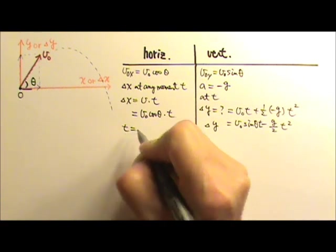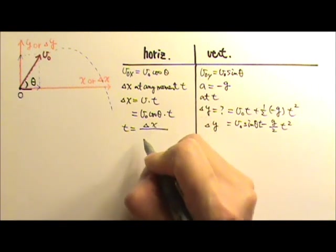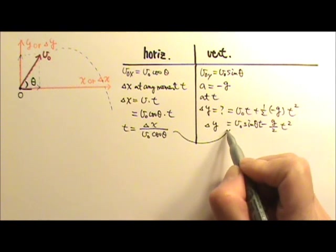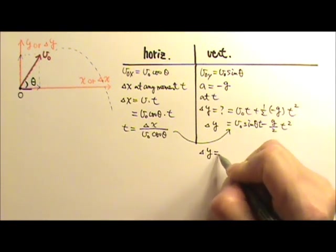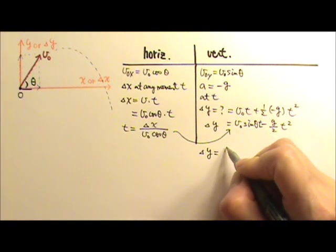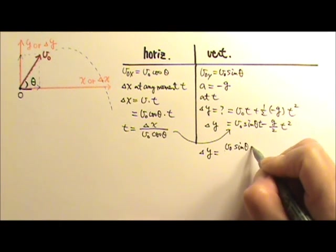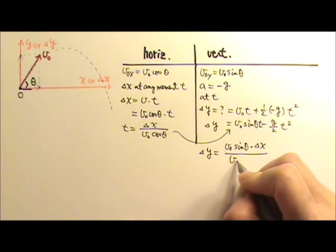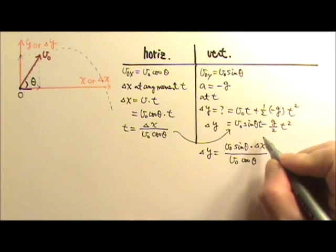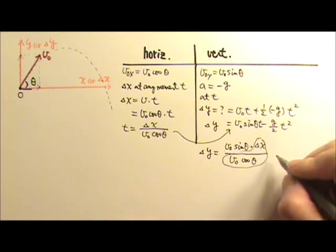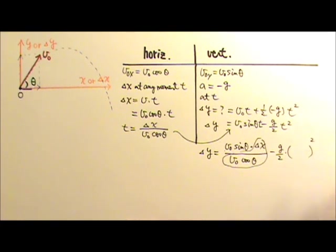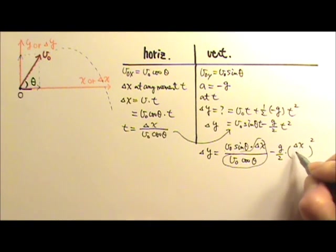So I just have to solve for t over here. Delta x over VO cosine theta, and then plug it in there. So I have delta y equals to VO sine theta times t, and that means it will be delta x over VO cosine theta, because that is t. Minus g over 2 times t squared, and what is t? Delta x over VO cosine theta.